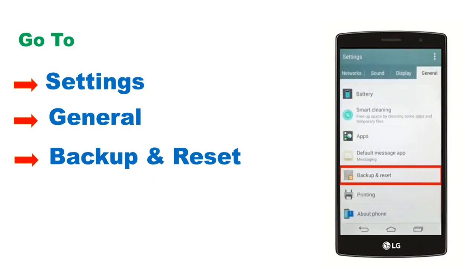Click on the Settings app from the home screen. You can see the Backup and Reset option under the Personal or General tab. Now click on Backup and Reset option.